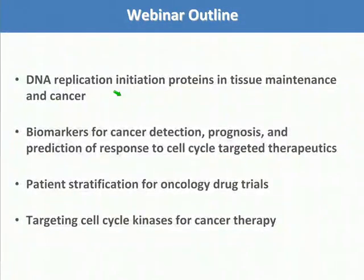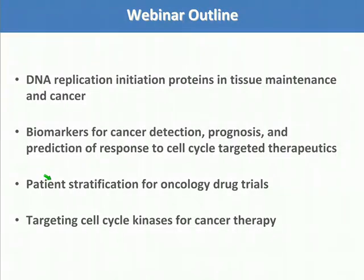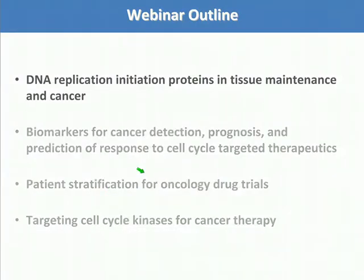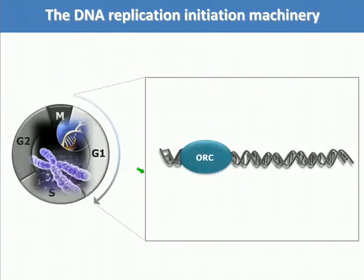In this webinar today, I will be talking about DNA replication initiation proteins in tissue maintenance and cancer. I will be making a case for some of these proteins as biomarkers for cancer detection, for prognosis, and for prediction of response to cell cycle targeted therapeutics. I will also make a case that some of these biomarkers can be used for patient stratification for oncology drug trials, and I will make a case for the replication initiation machinery as a potential new molecular target for cancer therapy.